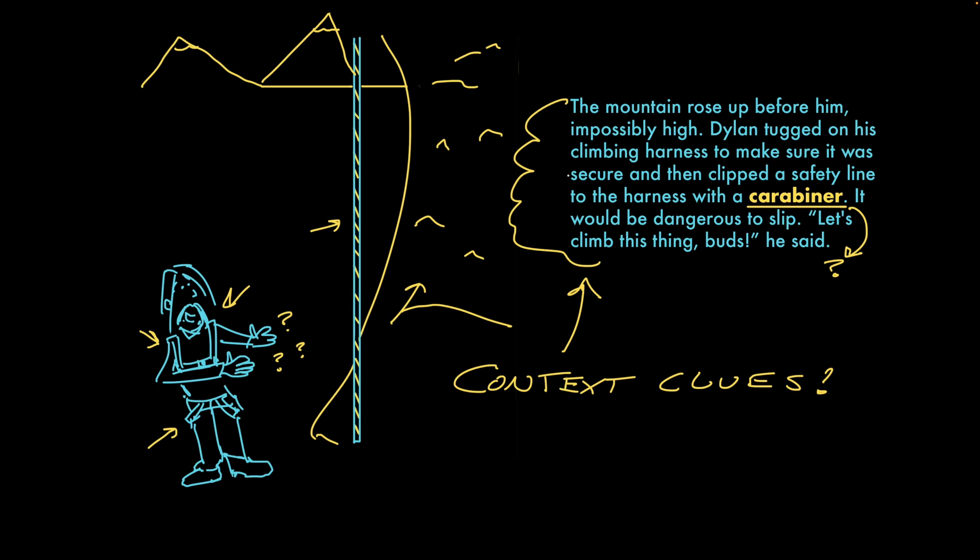All right, here are some clues I identified. Let's see if yours were similar. So, carabiners have to do with climbing. We know this because Dylan is about to climb up a mountain, and he's wearing a safety harness. We know that carabiners link things together, and we know this because he clips a line, a rope, to his safety harness connecting them.